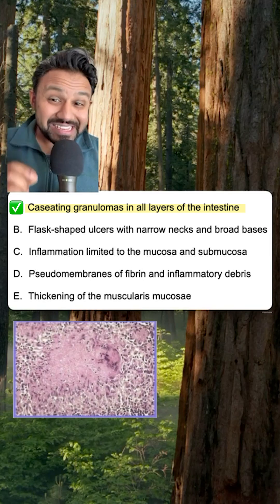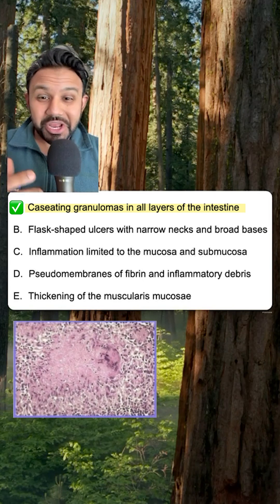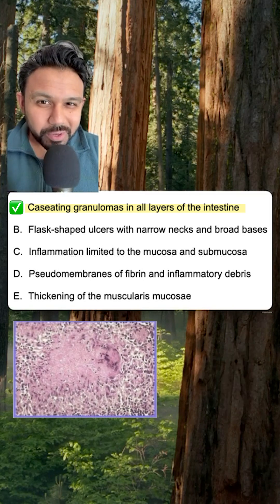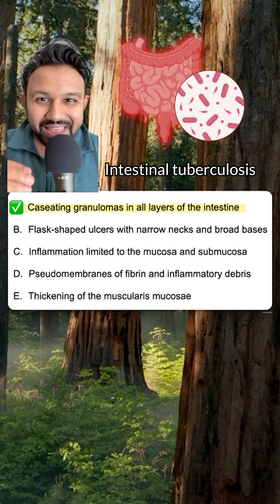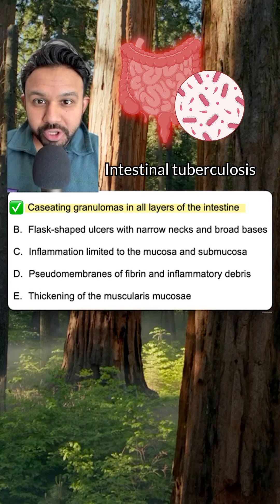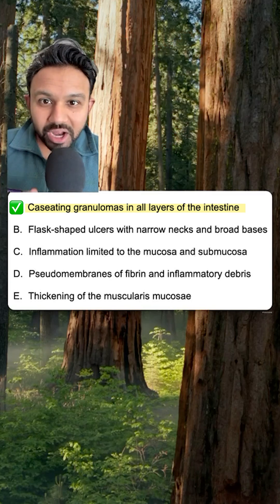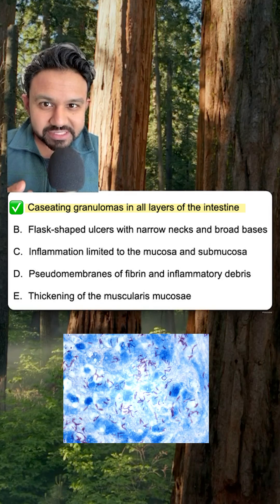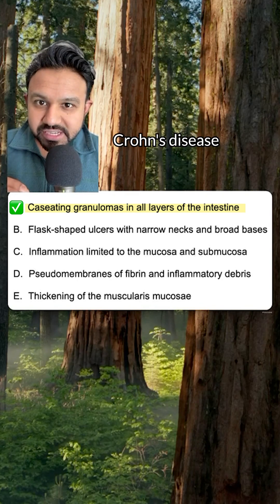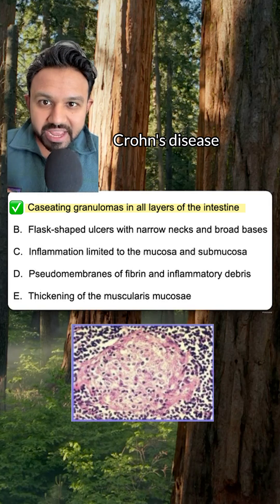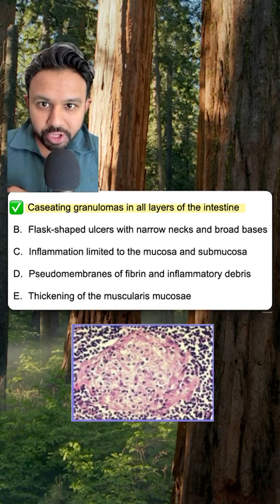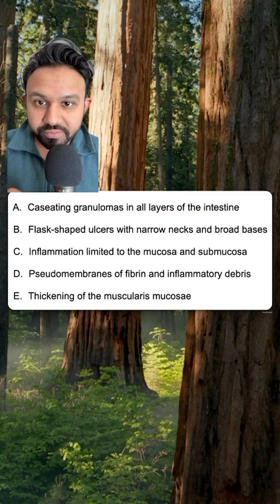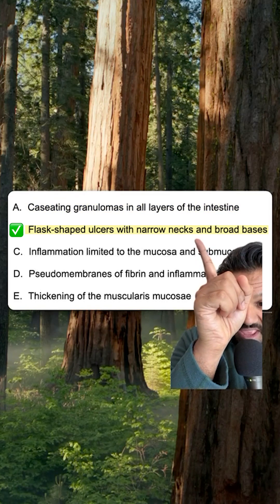Answer choice A: casein and granulomas in all layers of the intestine. This refers to intestinal tuberculosis. Watch for acid fast bacilli. And just to contrast, Crohn's disease is non-casein granulomas with transmural inflammation.